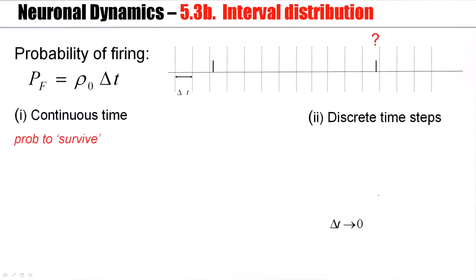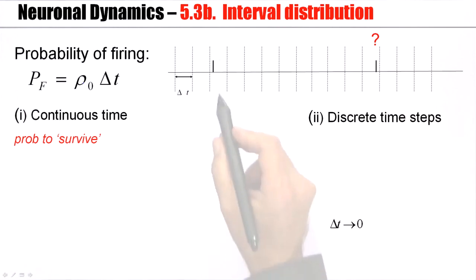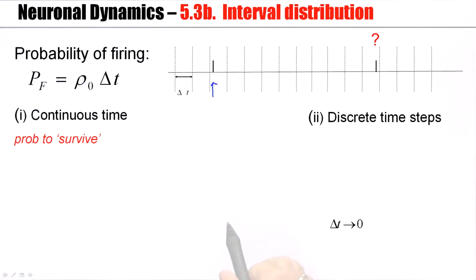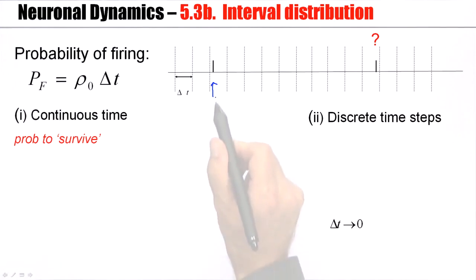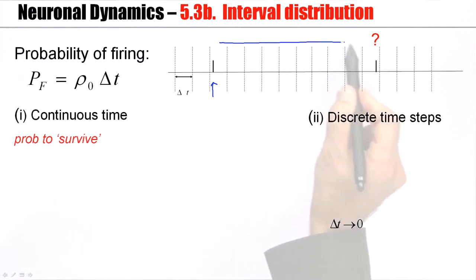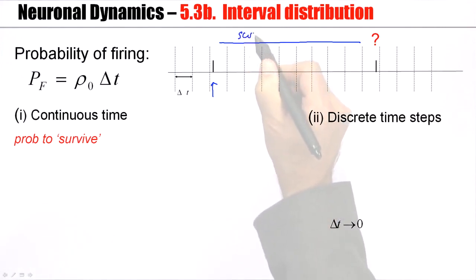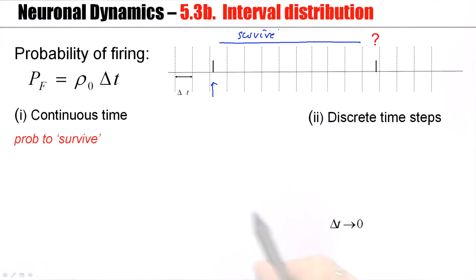Now suppose we have a neuron model that is a Poisson process, so it fires in each time step delta t with this probability. Given that it has fired at some moment, another question is: can I calculate the interval distribution? That is, given that it fired here, what's the probability that it survives for all this time up to here without firing again?